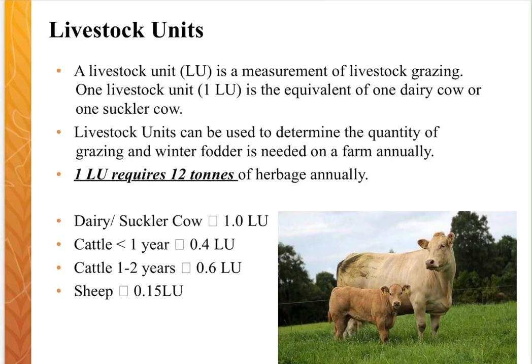Today we're looking at calculating livestock units. A livestock unit is a measurement of livestock grazing — one livestock unit is the equivalent to one dairy cow or one suckler cow. Basically, what it means is the quantity of grazing or winter fodder that's needed on the farm annually.